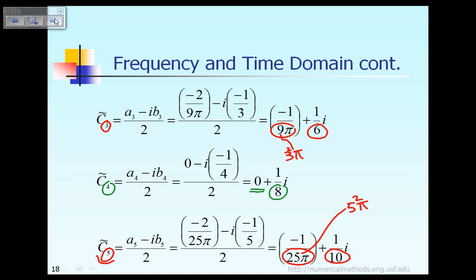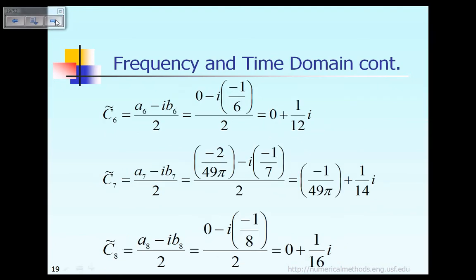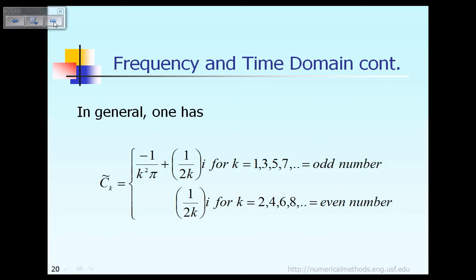When the index k equals 6, which is an even number, the real part is equal to 0, and the denominator of the imaginary part is doubled, becoming 12. And when k equals 7, which is an odd number, the real part denominator is 7 squared times pi, and the denominator of the imaginary part is doubled, so 7 doubled becomes 14. Based on that pattern, we can write out the answer for C̃_k in a very nice compact form.